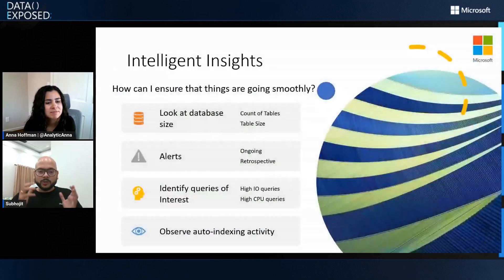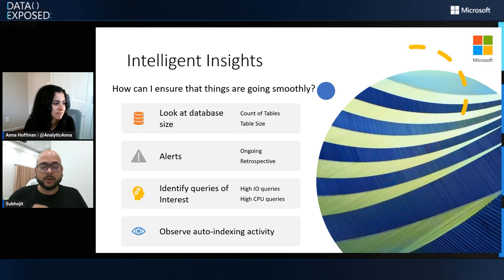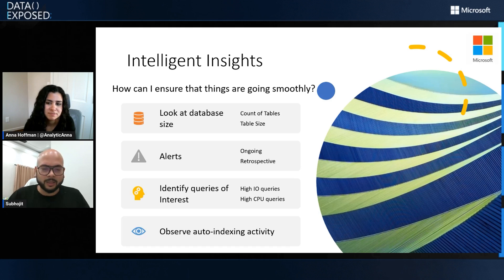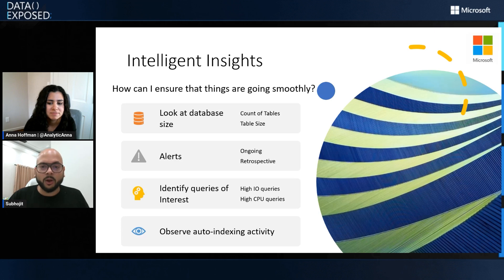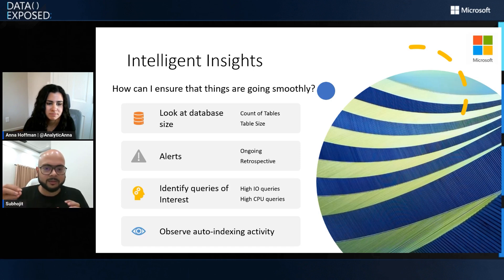So say you're using Fabric SQL Database to store your data workload and you suddenly find your database running slow or your queries not running as fast as you expect. The Fabric SQL DB Performance Dashboard would help you monitor and understand if there's something wrong with your database, give you a basic hint. It would show alerts if there's something ongoing or retrospective alerts. You can see the table size, count tables, identify certain important queries, and even observe auto-indexing activity.